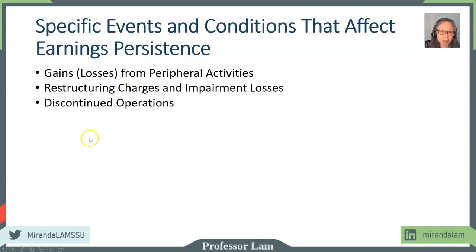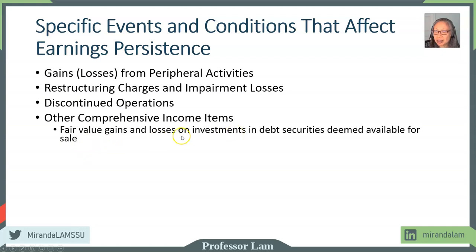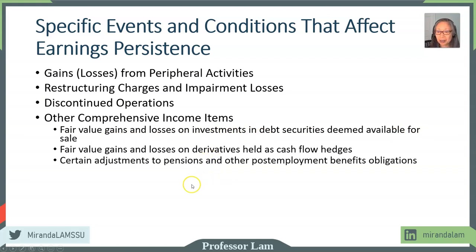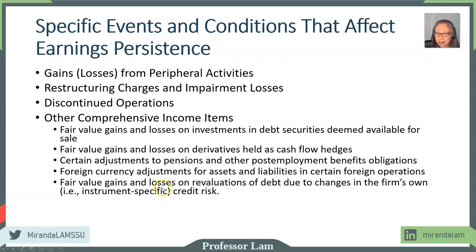Discontinued operations, by definition, should not be part of estimating the future. We also have other comprehensive income — these are important. A lot of these have to do with fair value gains and losses: on investments in debt securities, on derivatives, adjustments to pension due to interest rate changes, and foreign currency adjustments due to revaluation.